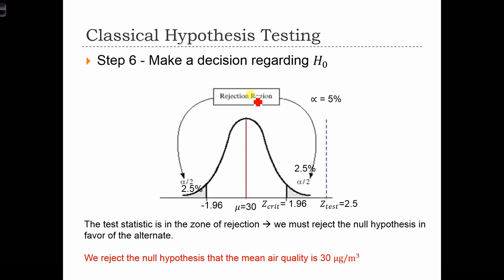So here's the normal curve of the sampling distribution. Here's our mu of 30, this is a z-score of 0, and here's our z-test of 2.5. That corresponds to an x bar equals 35. When we standardize the x bar, we get a z-test of 2.5.